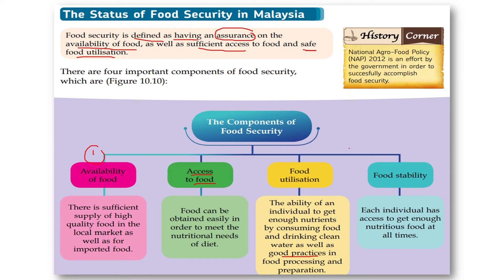The fourth and last component is food stability, where each individual has access to get enough nutritious food at all times. Looking at the history corner here, the National Agro Food Policy (NAP) 2012 is an effort by the government to successfully accomplish the food security goals we have been discussing.